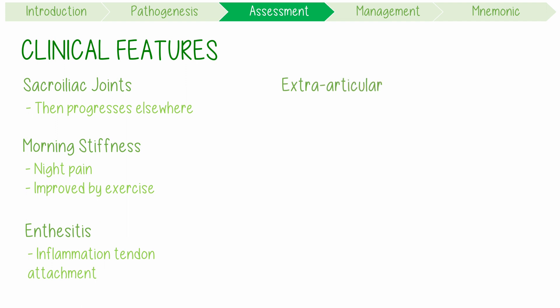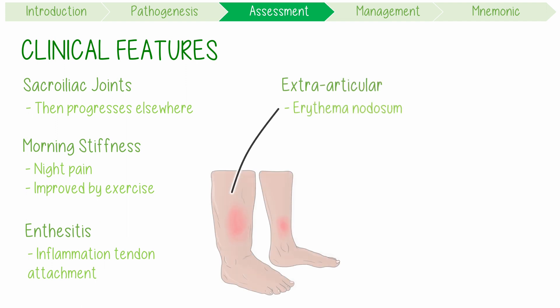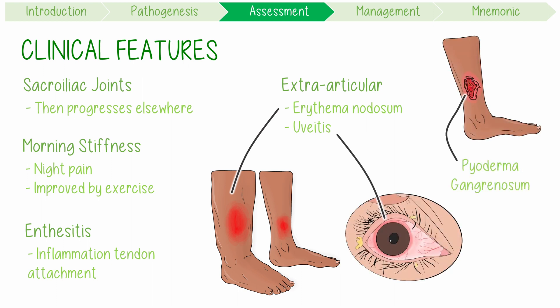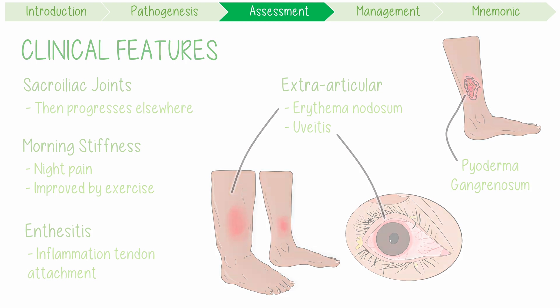Extra-articular features include erythema nodosum, uveitis, and pyoderma gangrenosum. Pyoderma gangrenosum is a rapidly enlarging, very painful ulcer characterised by dense infiltrates of neutrophils.